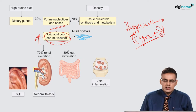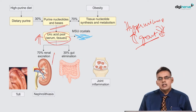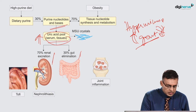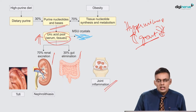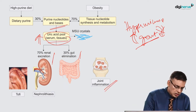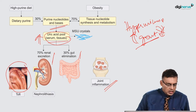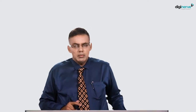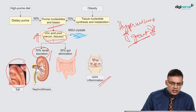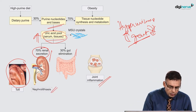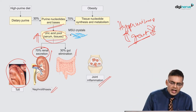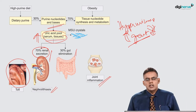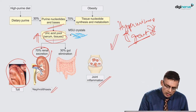Uric acid can be eliminated from the body — 70% from the kidneys and 30% from the gut. If they are getting deposited, they can produce inflammation in the joint. Tophi can be seen in the ear pinna. When there is too much uric acid secreted in the kidney, it carries a chance of producing renal stones, which are uric acid stones. Hyperuricemia may or may not precipitate gout, but carries a risk of producing uric acid nephrolithiasis.